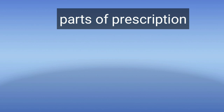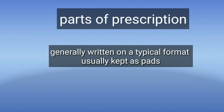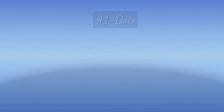Next, parts of prescription. Prescriptions are generally written on a typical format which are usually kept as pads. A prescription consists of the following parts: first is date; then name, age, sex and address of the patient; then superscription, inscription, subscription, signature, renewal instructions, and the signature, address and registration number of the prescriber.